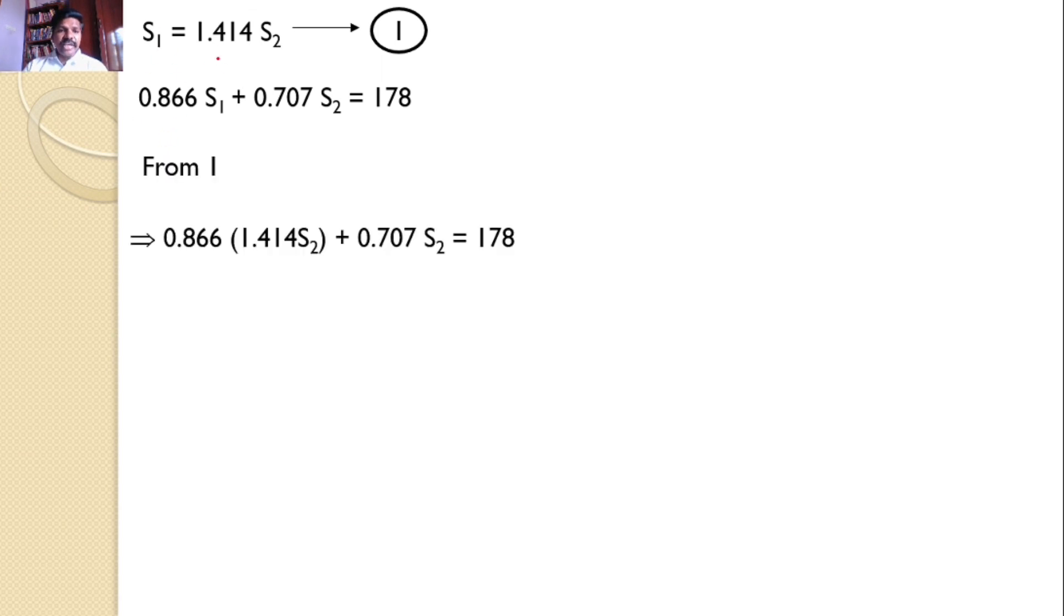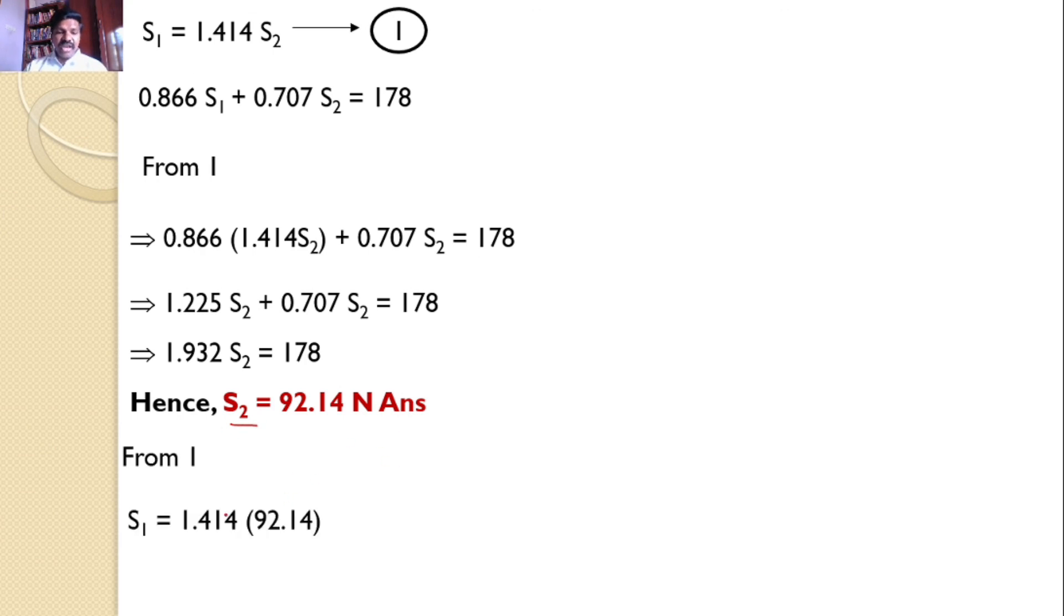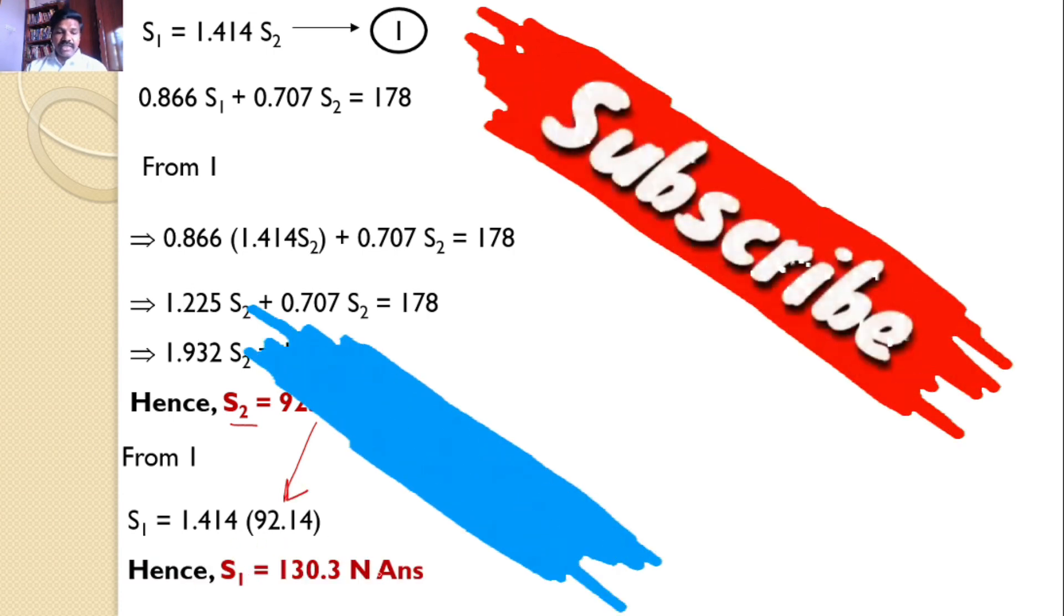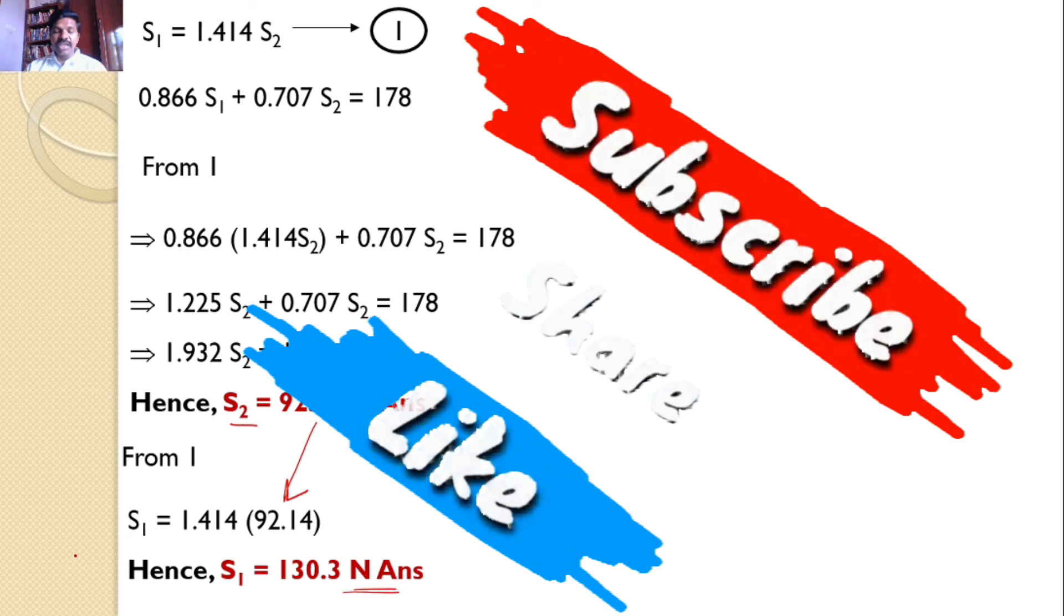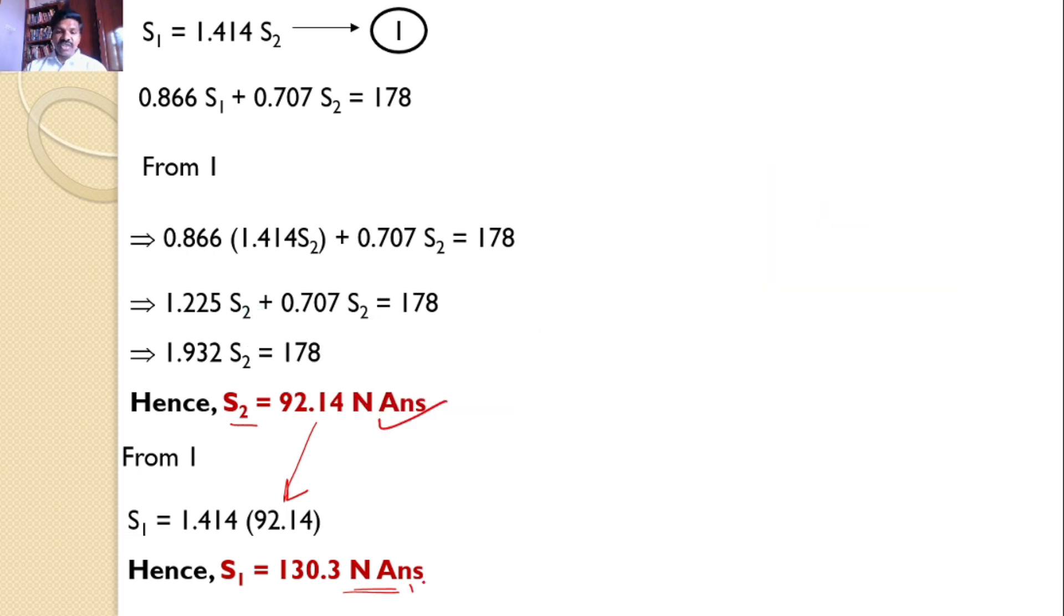Then I will get 0.866 times 1.414 S2 plus 0.707 S2 equals 178. Upon simplifying this, I will get S2 equals 92.14 Newtons. Since I know the value of S2, I can substitute in equation 1 and calculate S1. S1 is 1.414 times S2, which is 92.14. Upon substituting, I can calculate S1 as 130.3 Newtons. These two are the answers.